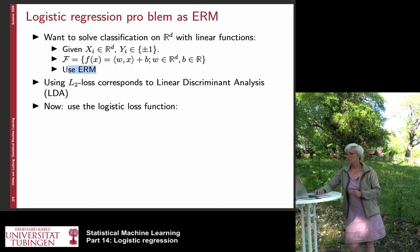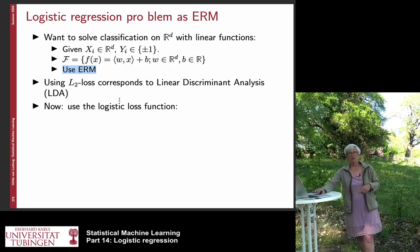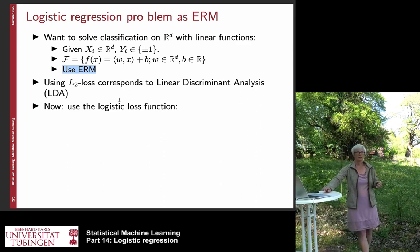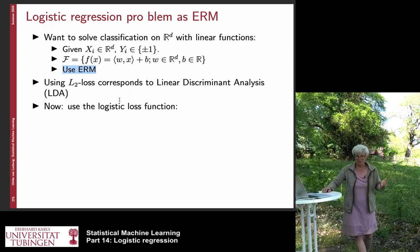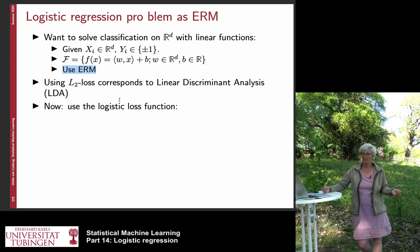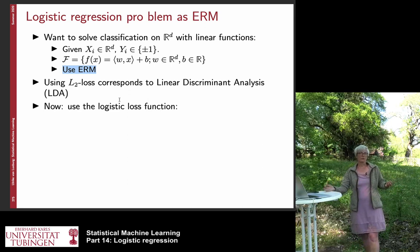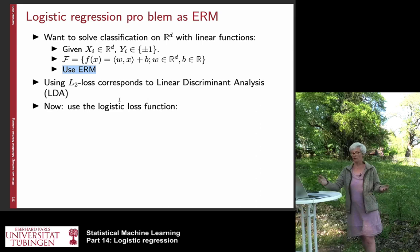What we want to do is empirical risk minimization. And we have already seen that the least squares loss essentially corresponds to linear discriminant analysis. And now we want to use a different loss function, namely the logistic loss function.